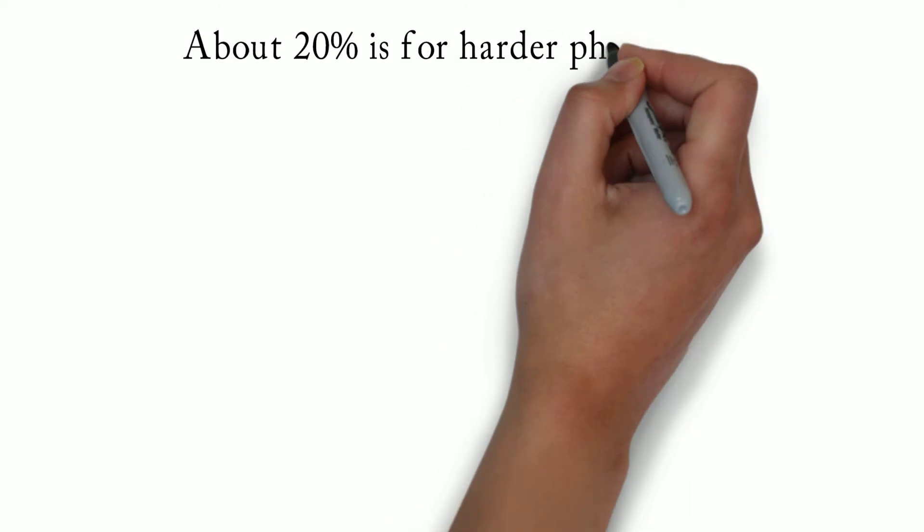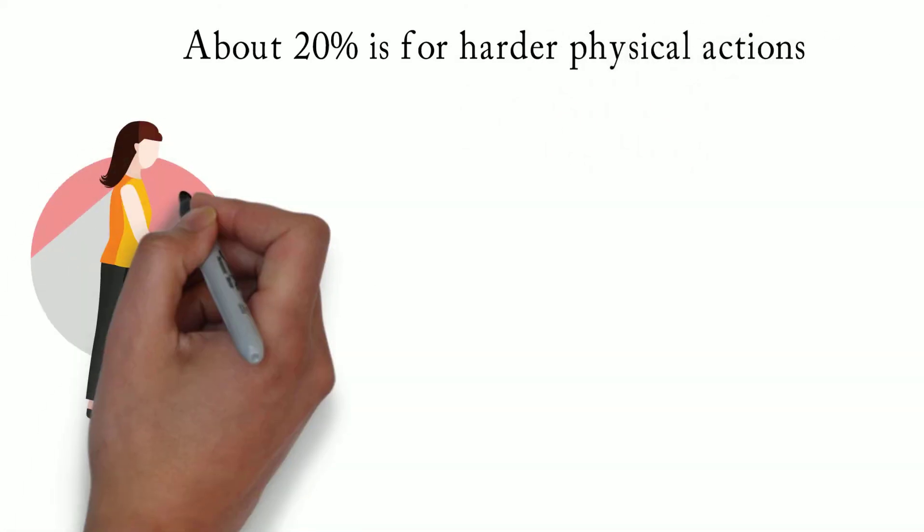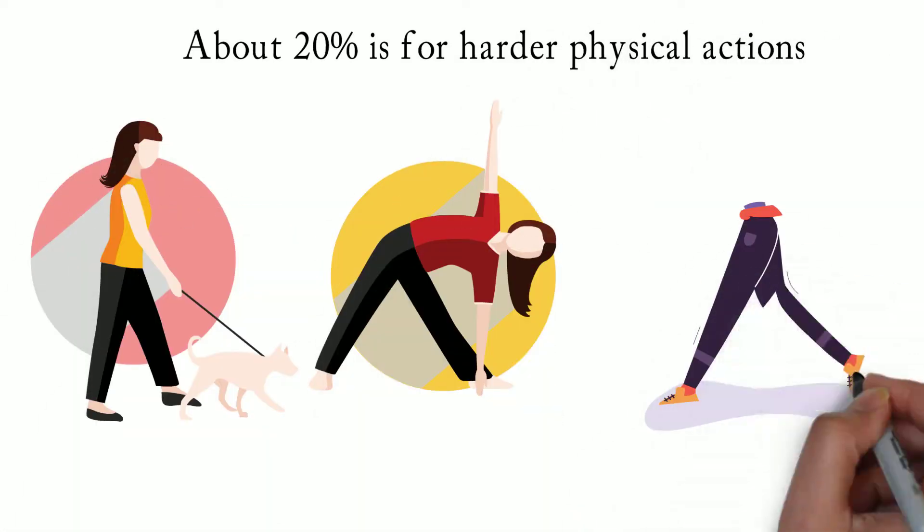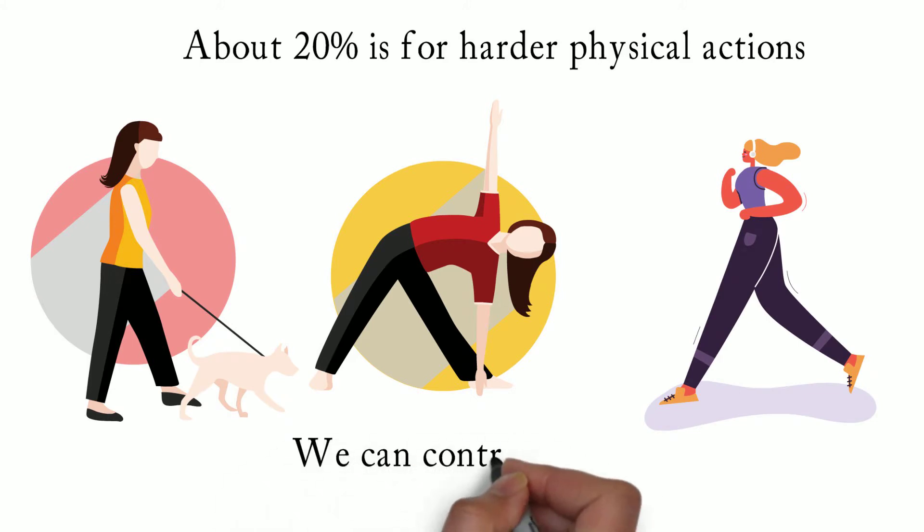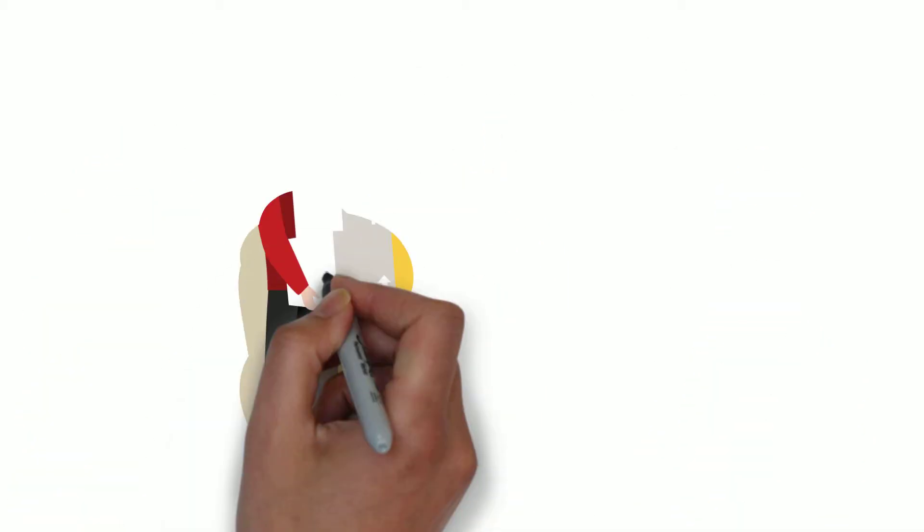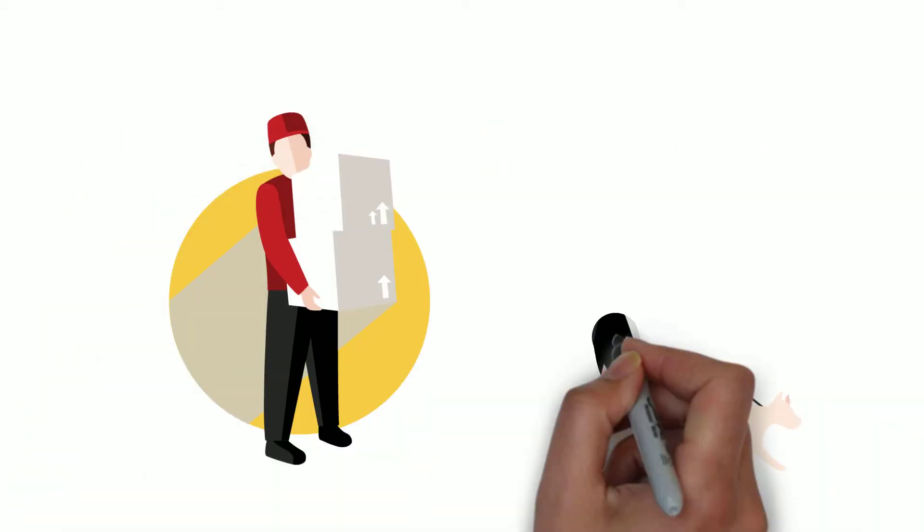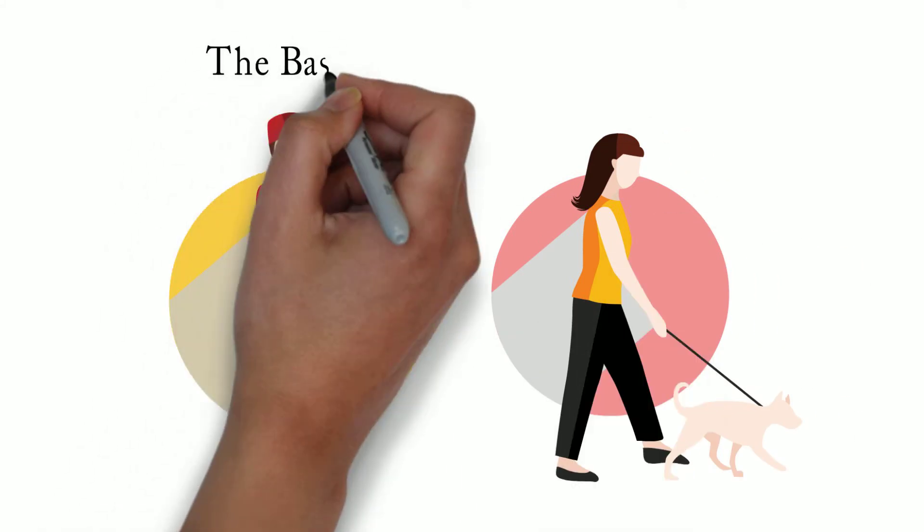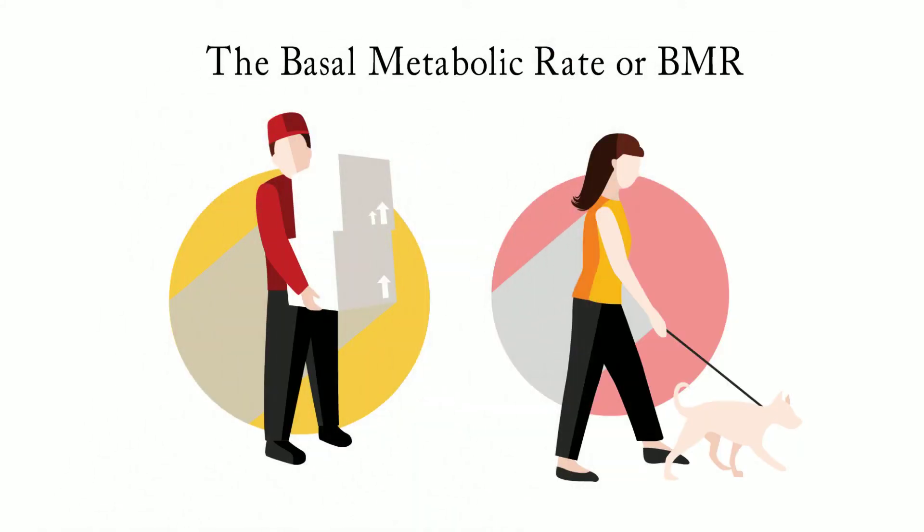About 20% is for harder physical actions, like walking, exercising, running and any other physical chores. We can control this by increasing or decreasing the physical activities. Unless you do vigorous activities on a daily basis, you'll never beat the basal metabolic rate, or BMR, by just simple exercise.